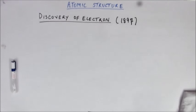As we discussed in the previous video, it was a belief up till the 19th century that the atom is the fundamental particle of an element. Towards the end of the century, in 1897, J.G. Thomson did an experiment and showed that the atom is not the fundamental indivisible particle of an element.